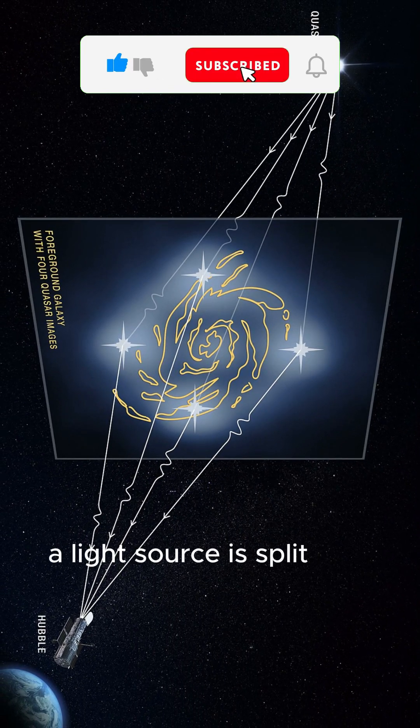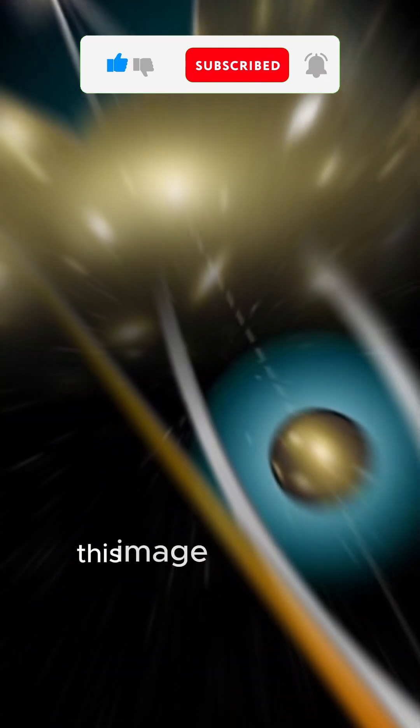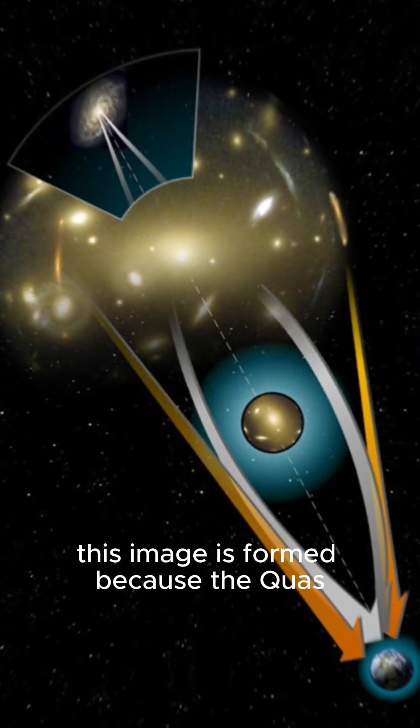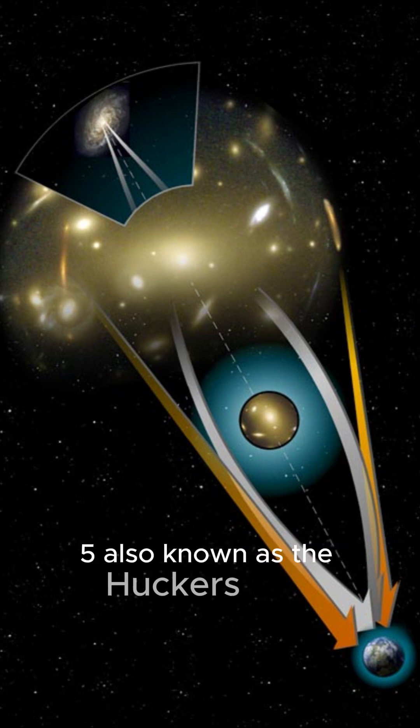a light source is split into four points, resembling a cross shape. This image is formed because the quasar is directly behind the center of the galaxy ZW 2237+0305, also known as Huchra's lens.